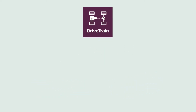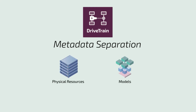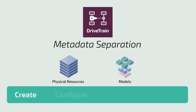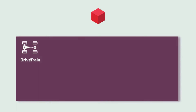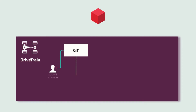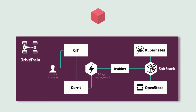Drivetrain is based on a principle of metadata separation of physical resources and the models for them, while providing a single flow to create, configure, deploy, and customize cloud environments. Operators maintain a single metadata model source of truth for all configuration elements of the stack within ReClass. It's versioned with Git, Gerrit, and Jenkins pipelines, then orchestrated by SaltStack.